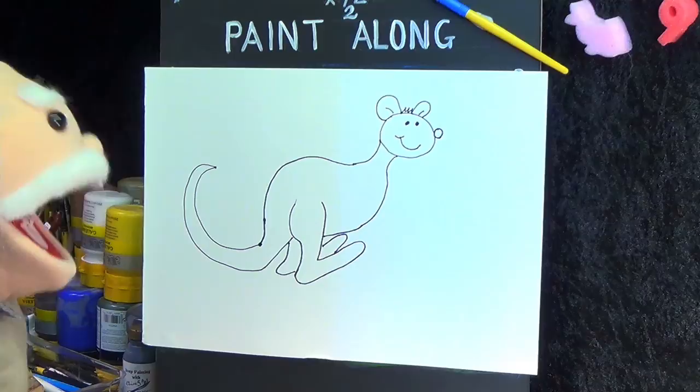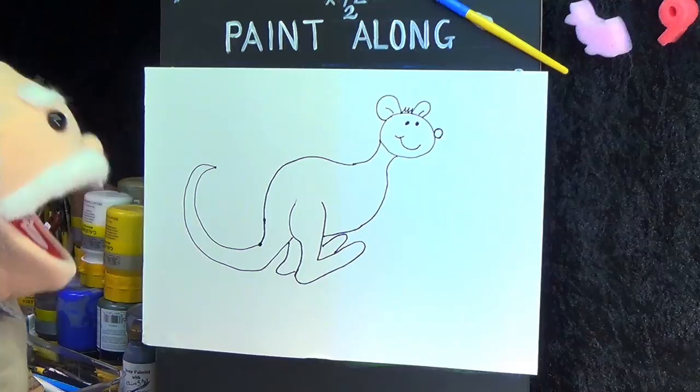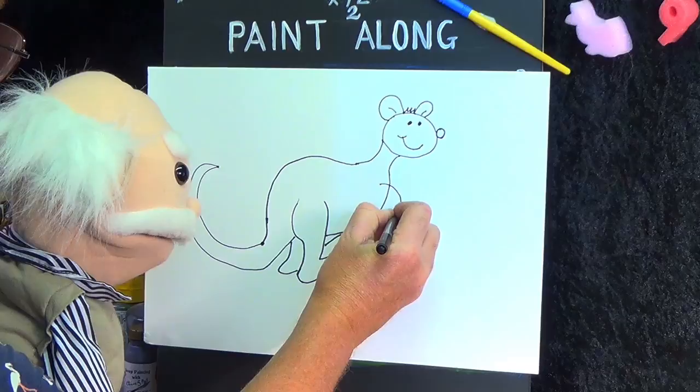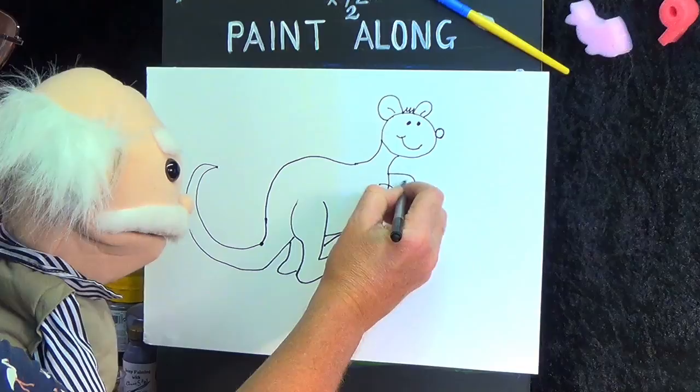Ho, ho. Very good. Very good. Right. He needs some legs on the front. Let's put his little paws in. There we go. Put his little paws in like that. Put another one there. That is excellent.